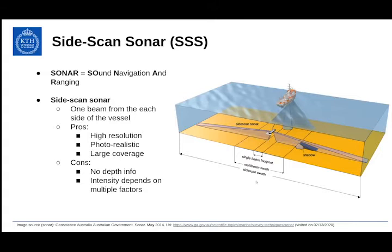If we look at side scan sonar specifically, we can see that it is transmitting one beam from each side of the vessel. Comparing to the other two types of sonars, the pros of side scan sonar are that it gives you high-resolution, photorealistic images. Also, as you can probably see from the swath, it gives much larger coverage of the seafloor compared to single beam or multi-beam sonar.